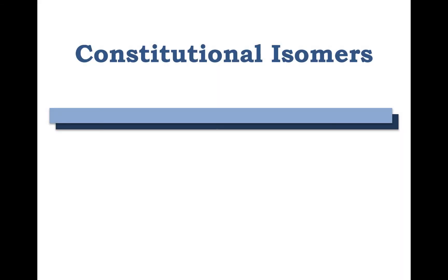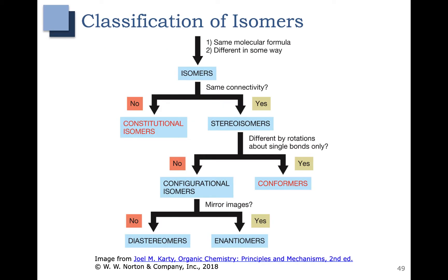In this video, we're going to talk about constitutional isomers. This nice diagram in your book shows the difference between constitutional isomers and stereoisomers. Molecules are considered to be isomers if they have the same molecular formula but are somehow different. If those isomers have different connectivity, they are classified as constitutional isomers. If they have the same connectivity, they are classified as stereoisomers. We'll talk more about stereoisomers in Chapter 5. For right now, we're going to focus on constitutional isomers.